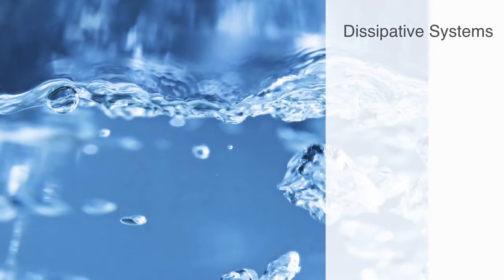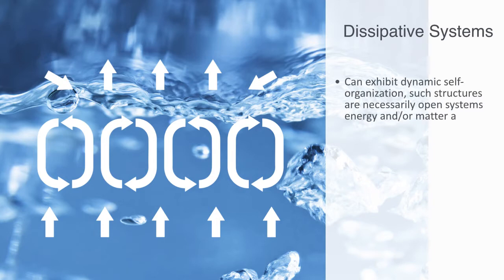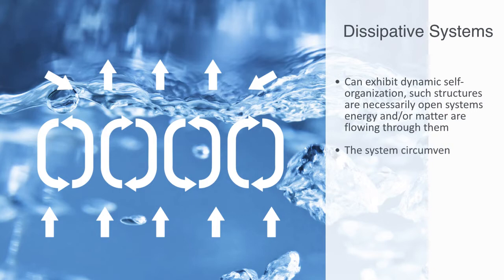These examples help to illustrate the nature of dissipative systems. Dissipative systems, such as the Bernard cells created by boiling water, can exhibit dynamic self-organization. Such structures are necessarily open systems — energy and/or matter are flowing through them. The system is continuously generating entropy, but this entropy is actively dissipated or exported out of the system. Thus it manages to increase its own organization at the expense of the order in the environment. The system circumvents the second law of thermodynamics simply by getting rid of excess entropy.